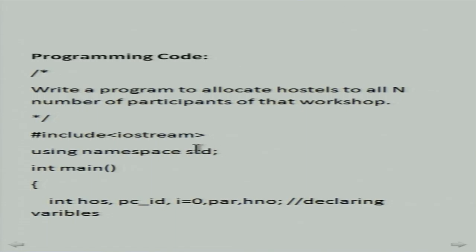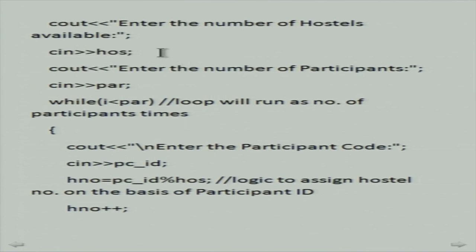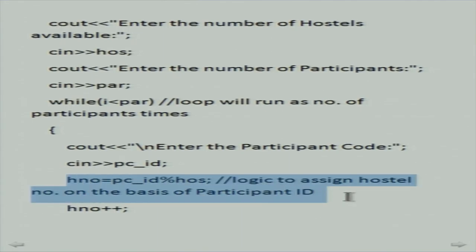The code is simple: we take number of hostels available, number of participants, then the while loop iterates for the number of participants. The hostel number is computed as participant ID mod number of hostels available. For example, 1220 mod 4 equals 0, remainder is 0, but hostel 0 doesn't make sense, so we increment by 1 giving hostel 1 for that participant. The output shows the hostel allotted to each participant.